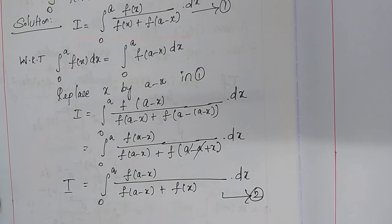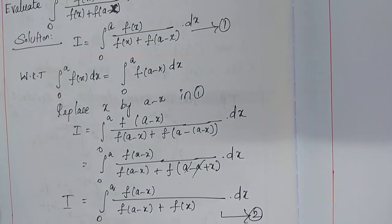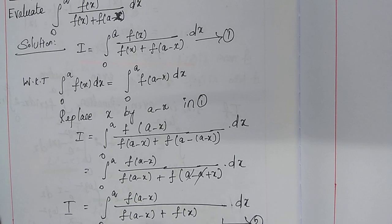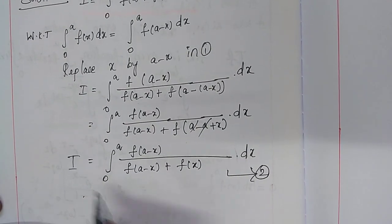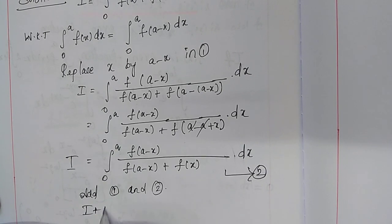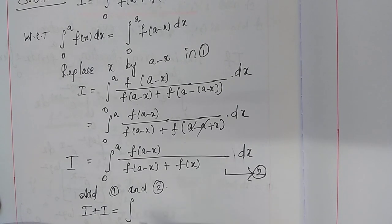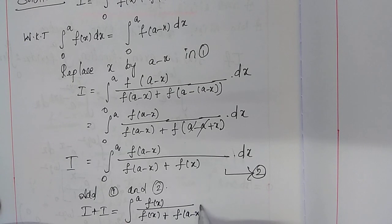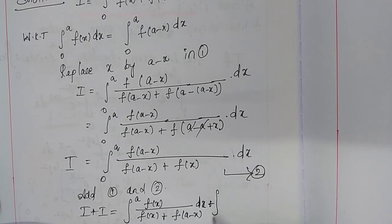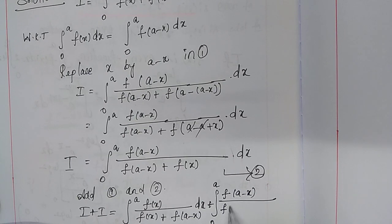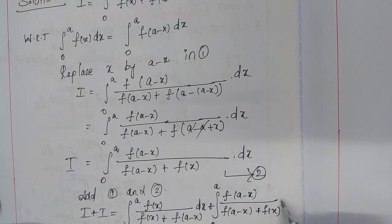Now adding equation number one and equation number two. The left side of both equations is i plus i. The right-hand side of equation one is the integral from 0 to a of f(x) over f(x) plus f(a minus x) dx, plus the right-hand side of equation two, which is the integral from 0 to a of f(a minus x) over f(a minus x) plus f(x), dx.